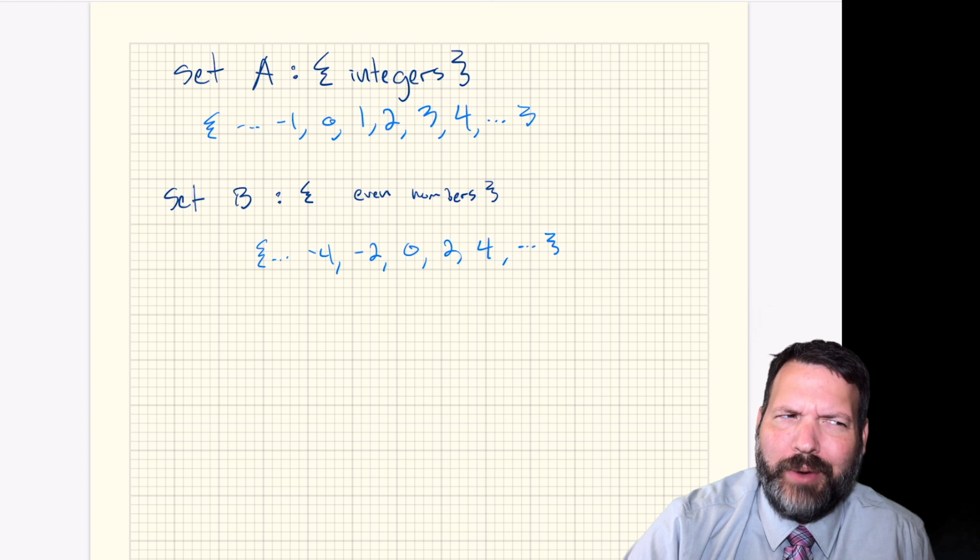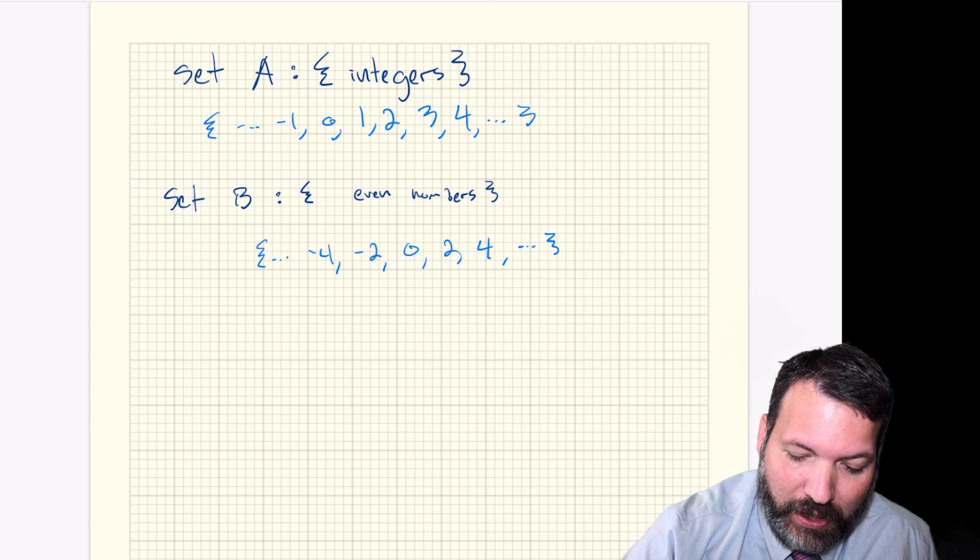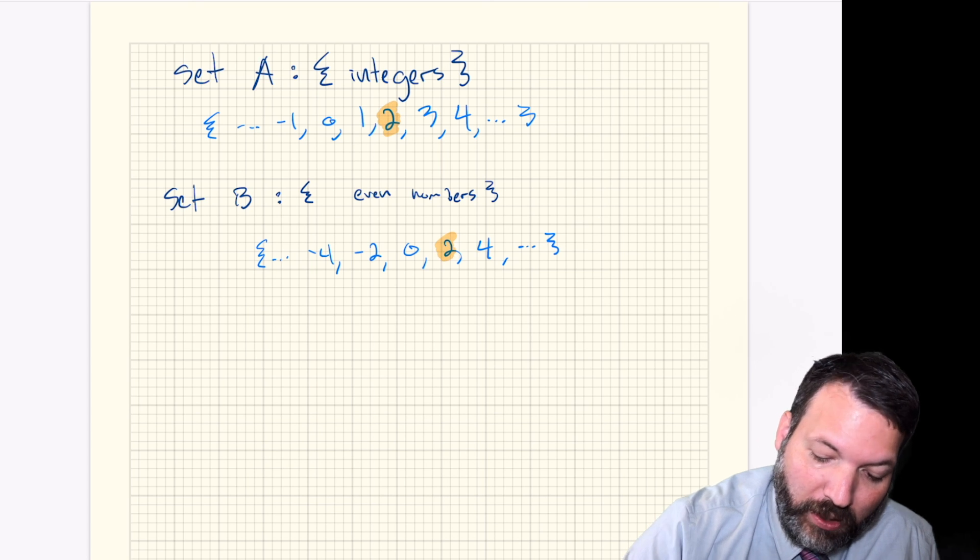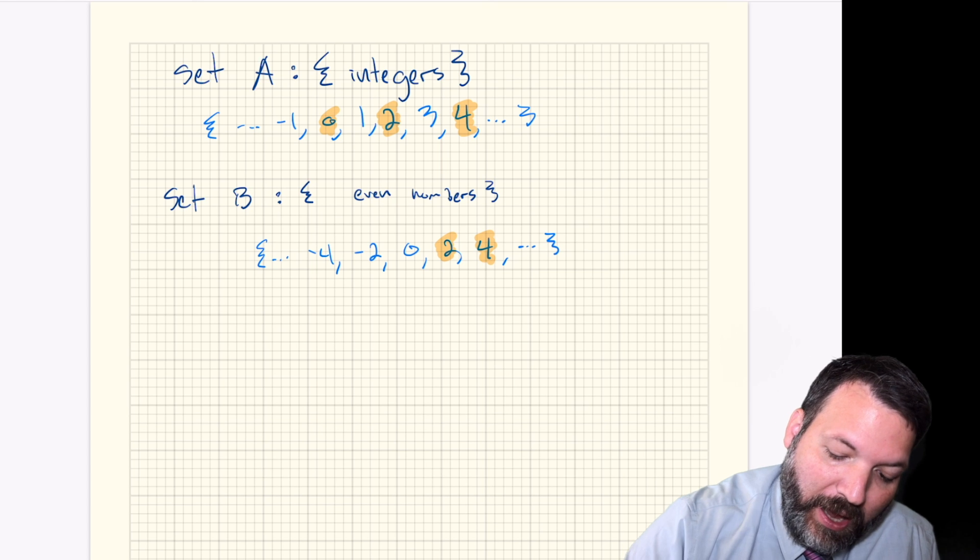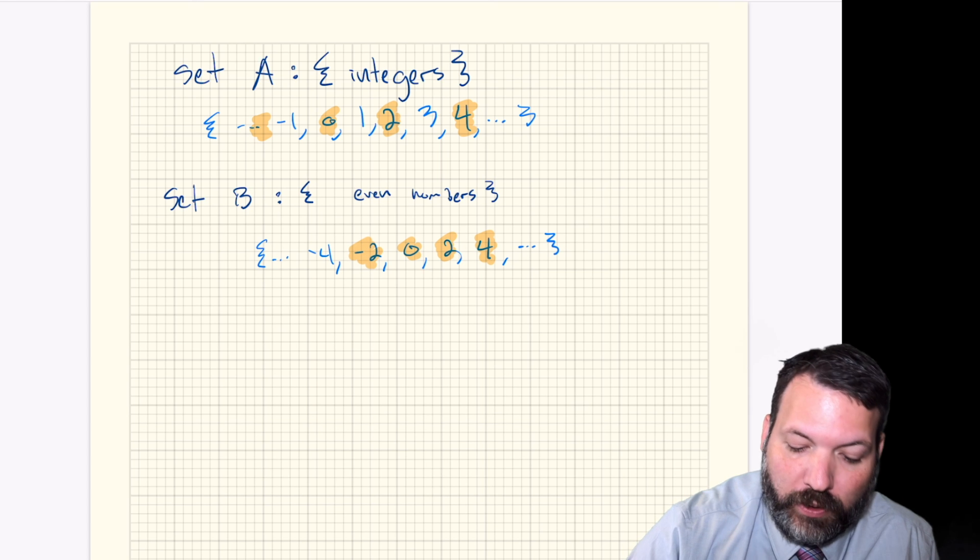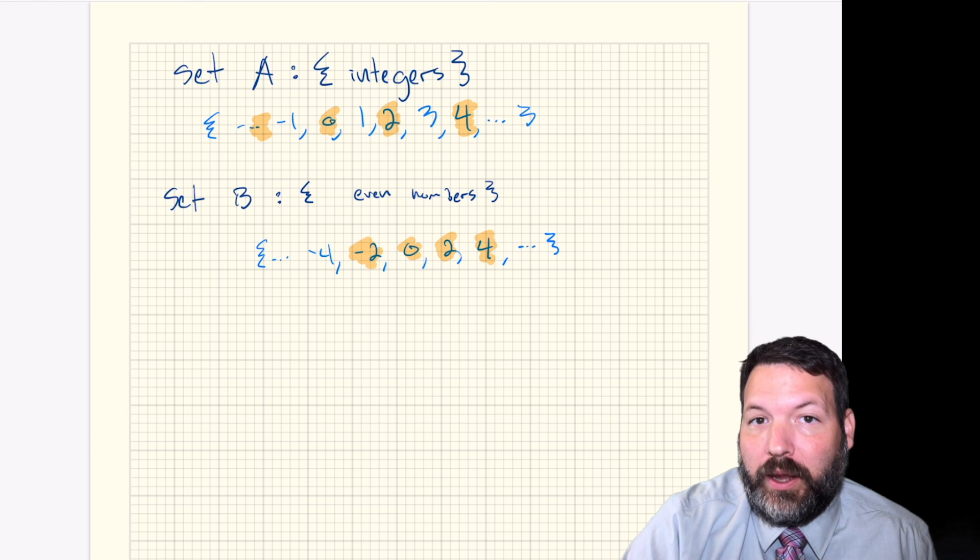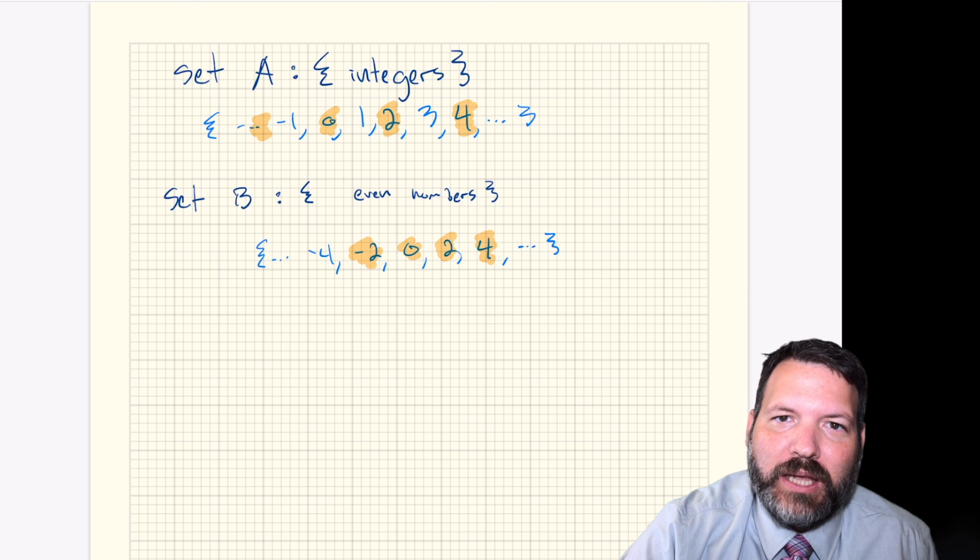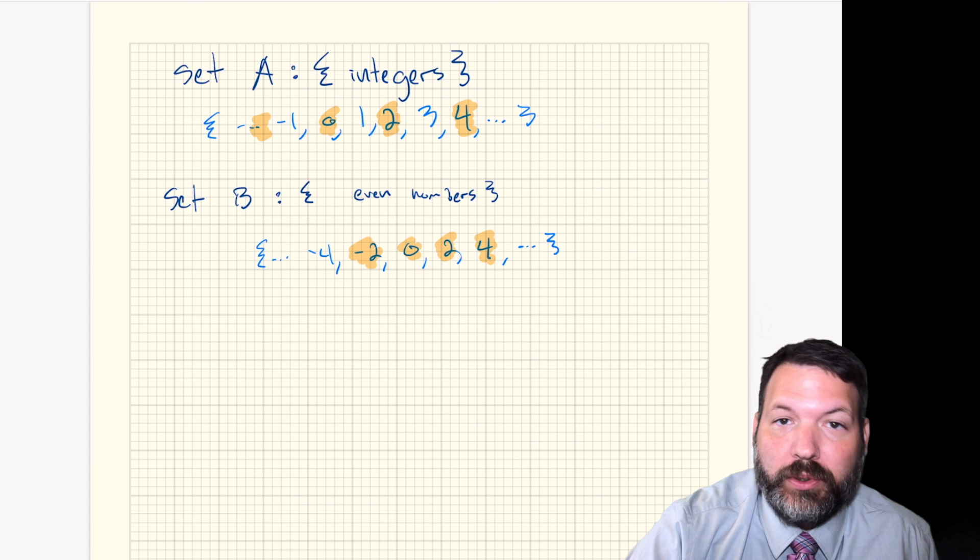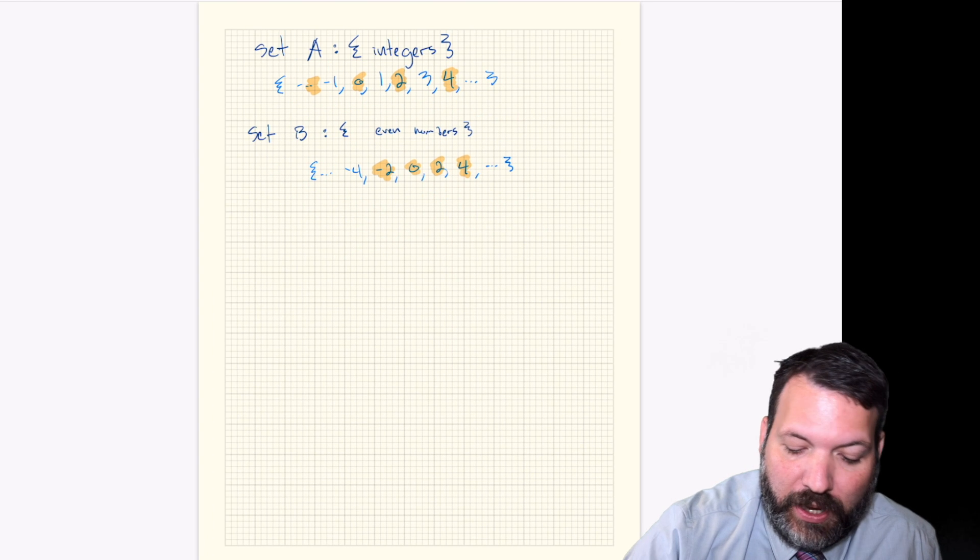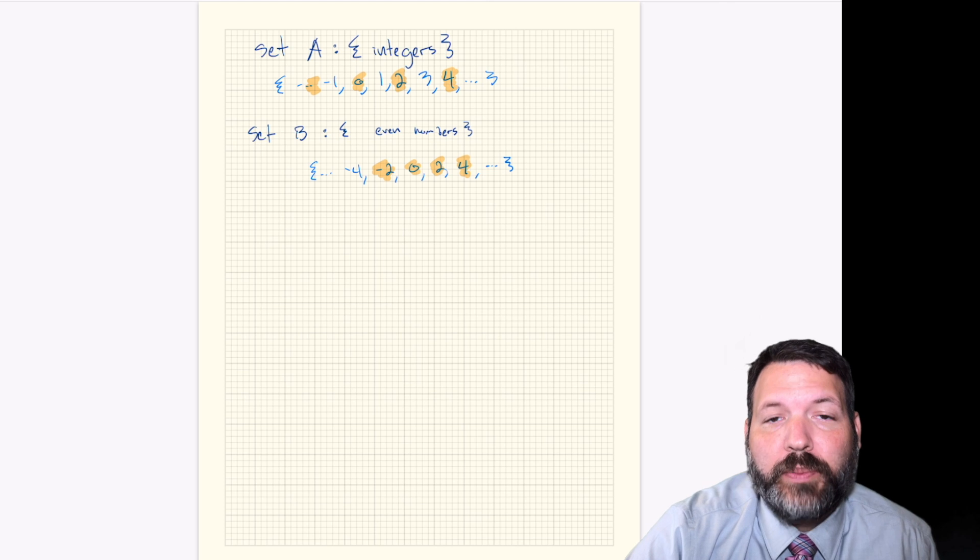Others of you might be thinking, well, wait, obviously the first set has more because the first set has all the same numbers as the second set. Like I can see the even integer two in both sets. I can see four in both sets. I can see zero in both sets. And clearly we didn't write it down, but we would have also had things like negative two and so on. But then the integers also have all the odd numbers, right? We've got negative one, one, three, five, seven. And so shouldn't it clearly be the case that set A is larger because it has all of those odd numbers as well as all the same even numbers that are in set B? There are different ways we could end up deciding the answer to this question.